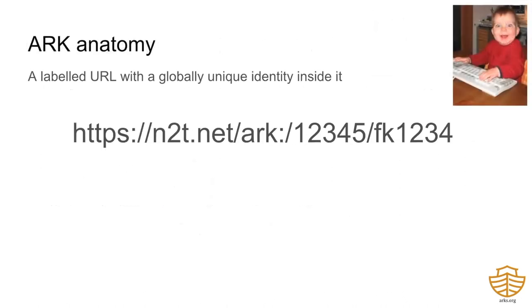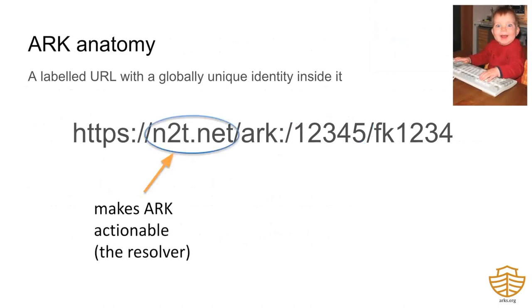Here's what an ARK looks like. At first glance, it's a URL that carries this internal label. To the right, the five-digit name assigning authority number identifies the organization that created the ARK. Further right, the part after that names the thing that the ARK is assigned to. To the left, the host name makes the ARK actionable, or something you can click on. It's also known as the Resolver.